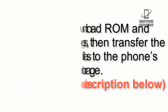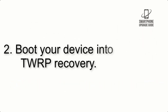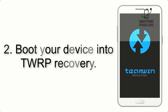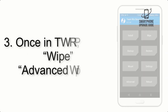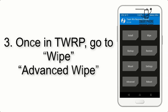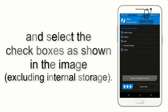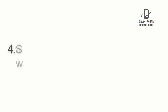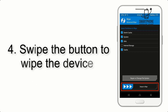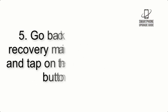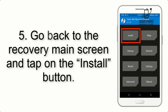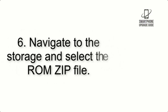Step 2: Boot your device into TWRP recovery. Once in TWRP, click on Advanced Wipe and select the checkboxes as shown in the image, excluding internal storage. Step 4: Swipe the button to wipe the device. Step 5: Go back to the recovery main screen and tap on the Install button.